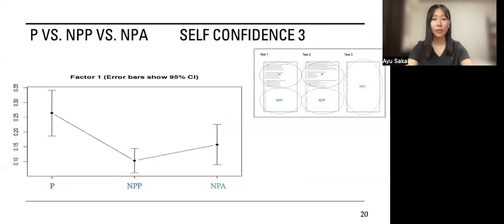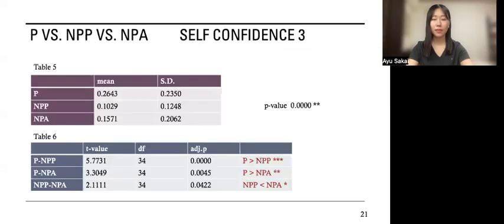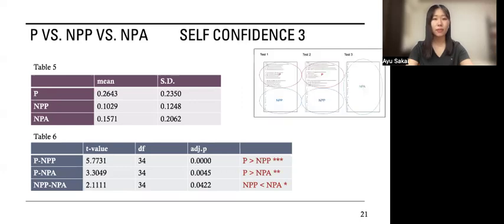Finally, here is the graph of which participants have strong confidence. Table 5 shows the means and standard deviation for the listening comprehension scores of answers which learners have strong confidence. The results show that P achieved the highest score followed by NPA, and NPP scored the lowest, as well as results of analysis 2.